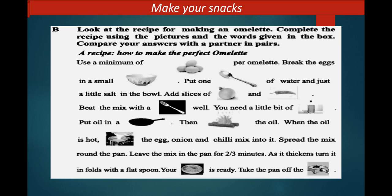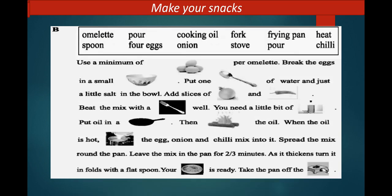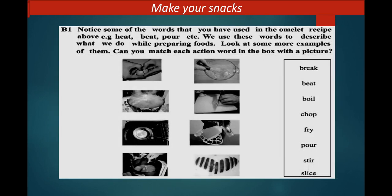Now let's go to the next slide. We have used these words for making omelette recipe. Now see B1. Notice some of the words that you have used in the omelette recipe above. For example: heat, beat, pour, etc. We use these words to describe what we do while preparing foods. Look at some more examples of them. Can you match each action word in the box with the picture?